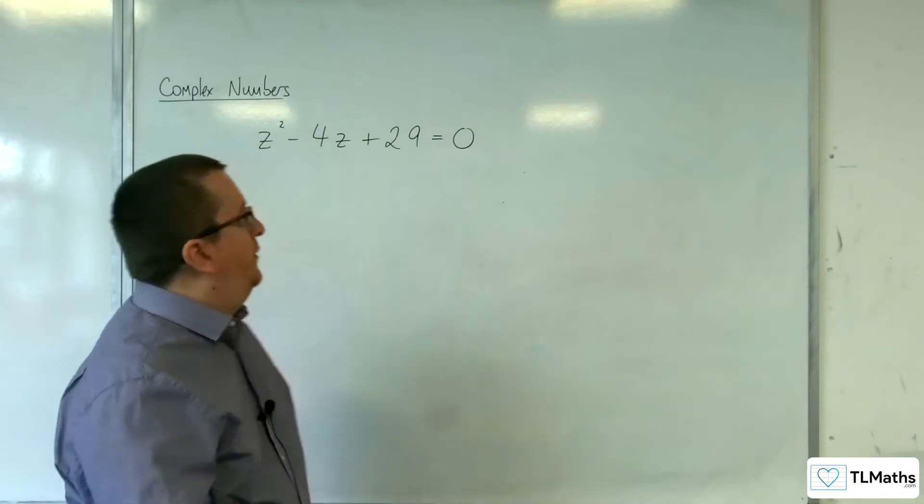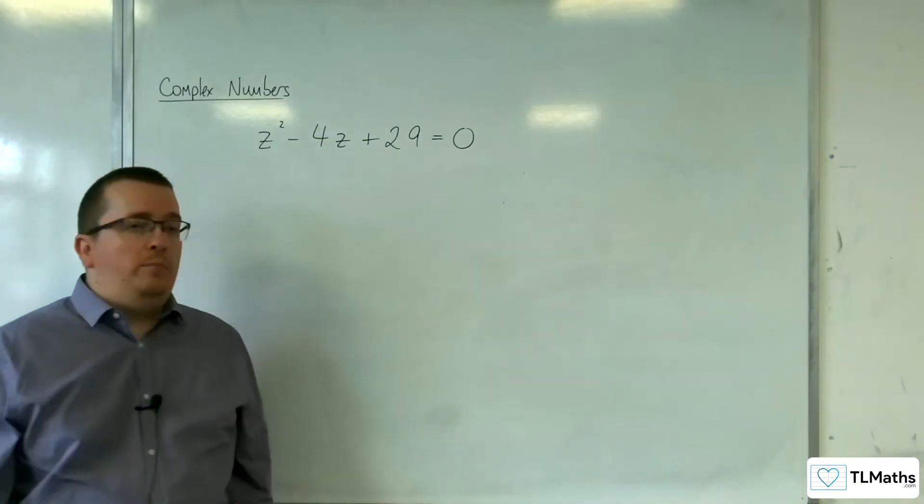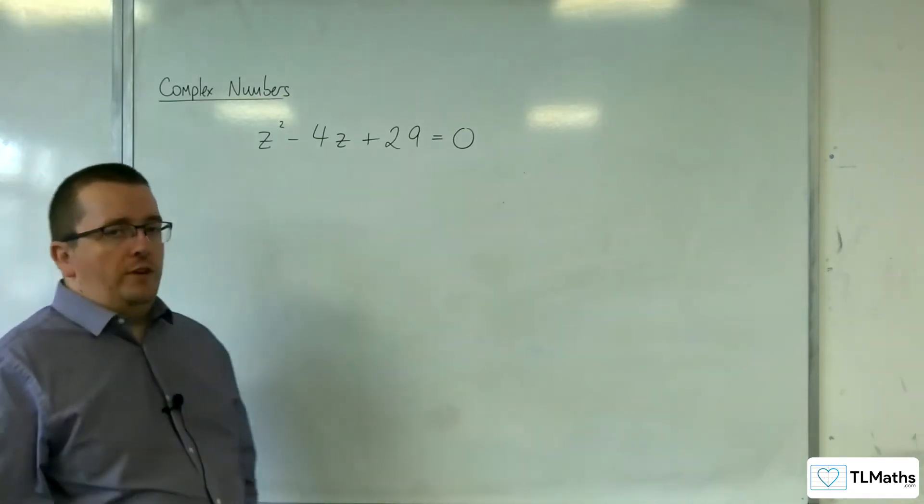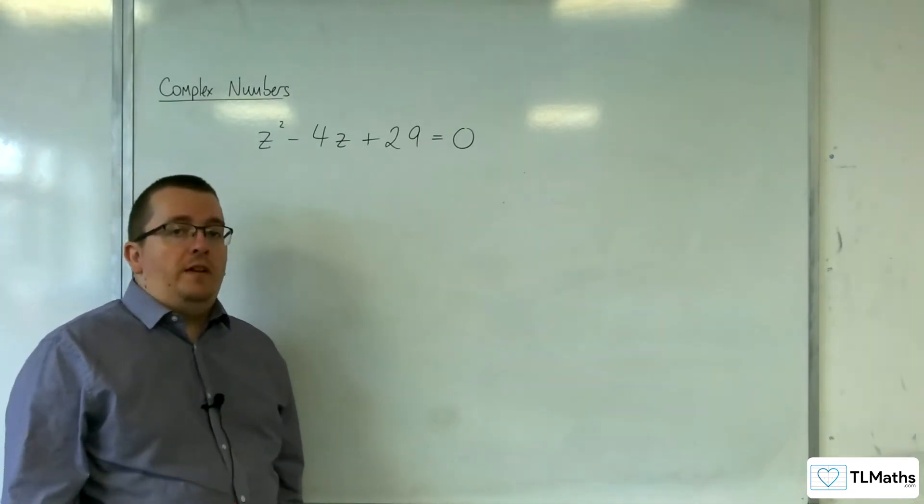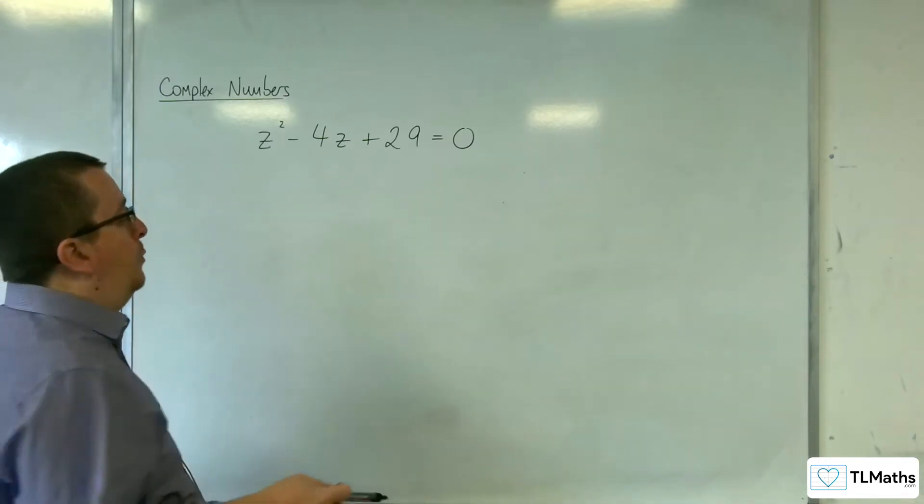So let's say you wanted to solve this quadratic equation: z² - 4z + 29 = 0. Now we could use the quadratic formula. You might want to prefer using completing the square. Let's go with completing the square.